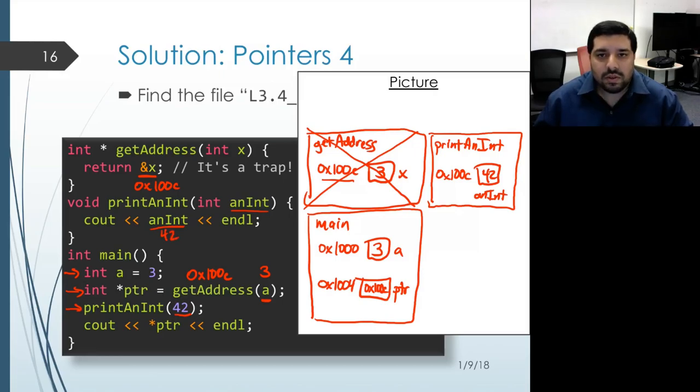And then the function returns and there's no return value. When that function returns, its activation record also gets reclaimed. And then we move on where we left off in main.